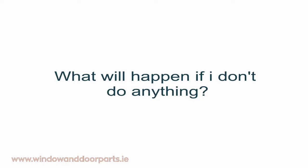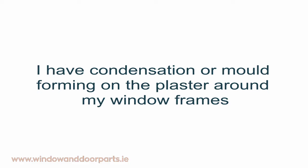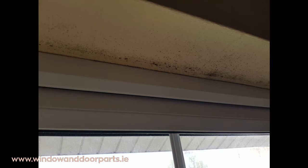What will happen if I don't do anything? Mould forms in damp conditions and the condensation around windows is ideal for mould to grow. Mould can destroy blinds and curtains and the condensation can cause wooden windows and window boards to rot. It is very common to see mould forming on the plaster around window frames. This is usually a sign that the space behind the plaster is uninsulated and therefore cold enough for condensation to form.